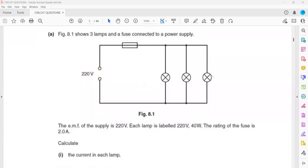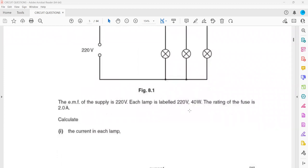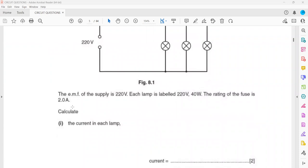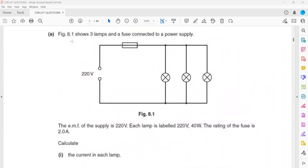In the question, the electromotive force, the EMF means when the chemical energy converted into electrical energy. Each charge carry 220 joules, that's called EMF. Each lamp is labeled 220V and the power is 40W. The rating of a fuse is 2 ampere. Rating of a fuse 2 ampere means maximum it can allow 2 ampere.